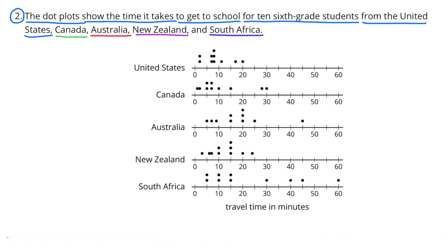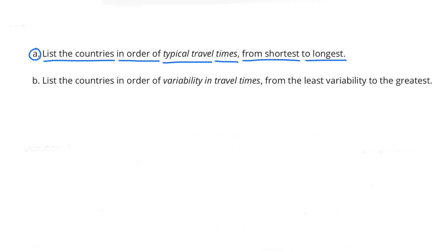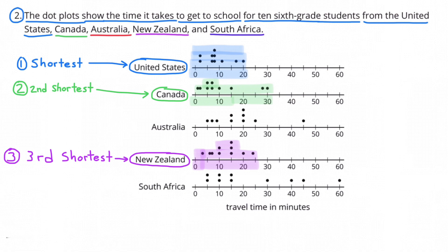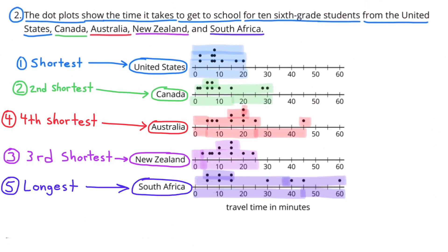Number 2: The dot plots show the time it takes to get to school for 10 6th grade students from the United States, Canada, Australia, New Zealand, and South Africa. A. List the countries in order of typical travel times from shortest to longest. The shortest travel time is the United States. The next shortest travel time would be Canada. The third shortest travel time would be students from New Zealand. The fourth shortest travel time would be students from Australia. And finally, the longest travel time would be students from South Africa.